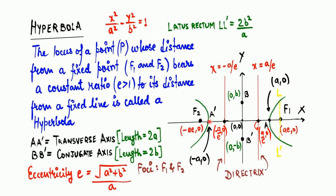If you measure from the center to vertex A you get a, and from center to vertex A' you also get a, so the total is 2a. Similarly from center to co-vertex B you get b, and from center to co-vertex B' you get b, so the total is 2b. Length of the transverse axis is 2a, and length of the conjugate axis is 2b.